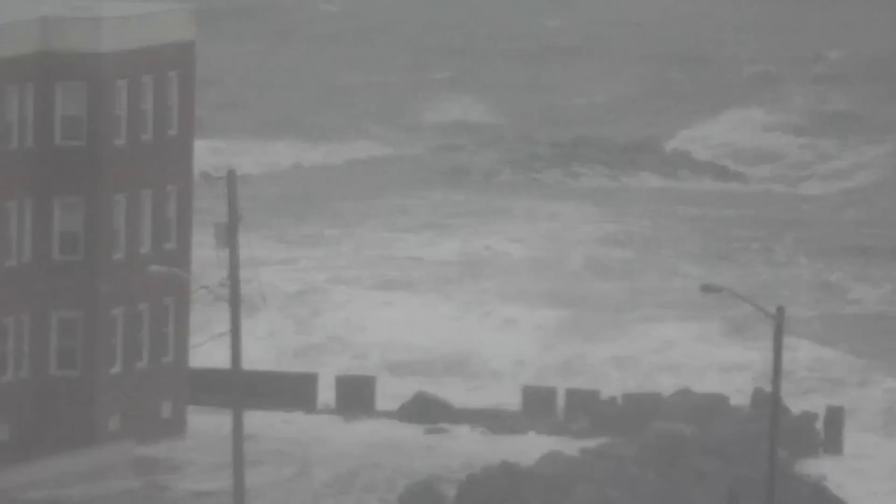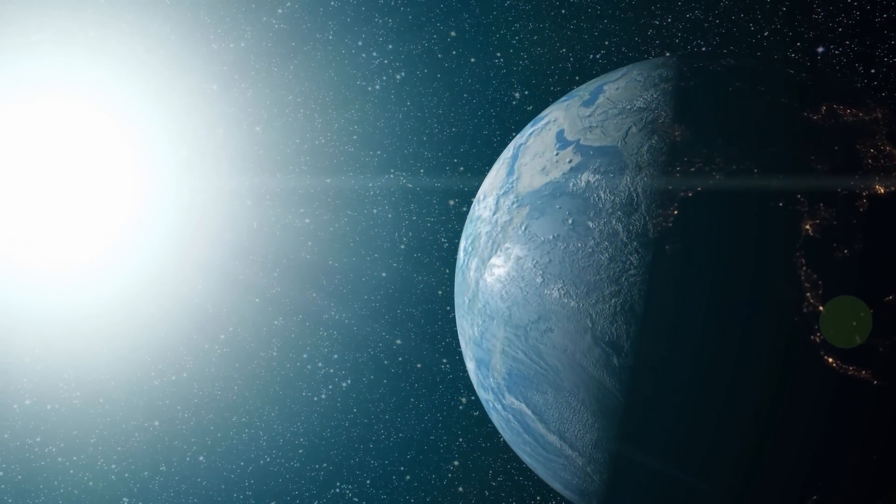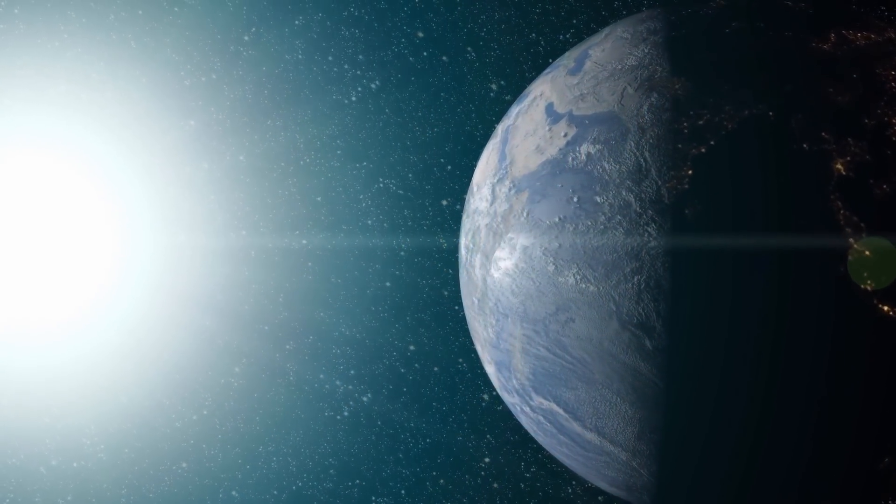Along with the earthquake, giant tsunamis would roll across the planet. They would completely destroy the coastal cities. But the tsunamis wouldn't be able to cool the burning planet.